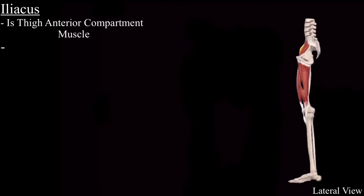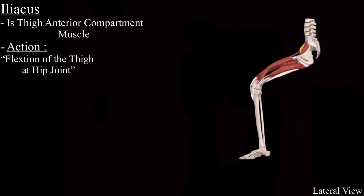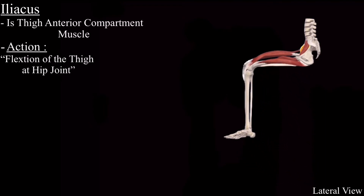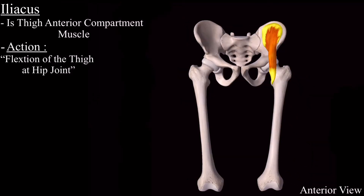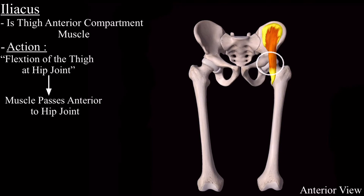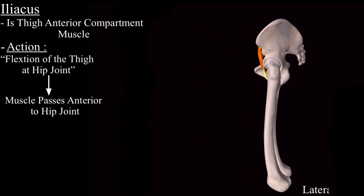The main action of the iliacus muscle is to flex the thigh at the hip joint, and it makes sense. The iliacus muscle passes anterior to the hip joint, so contraction of this muscle will pull the femur in the direction of flexion.